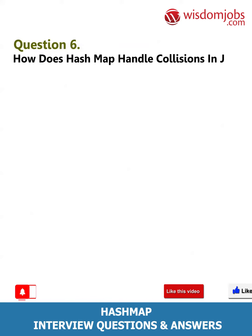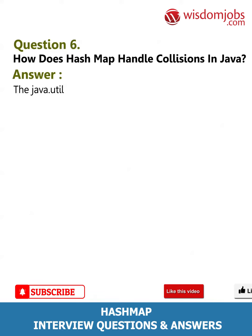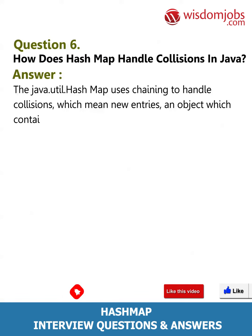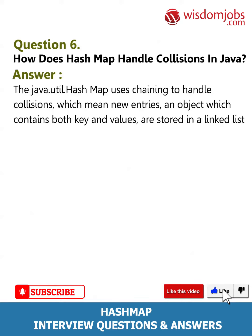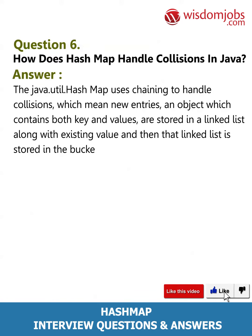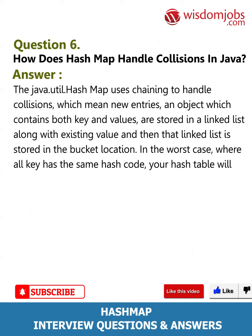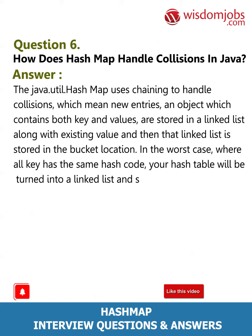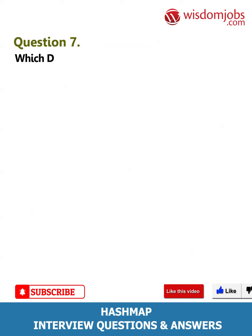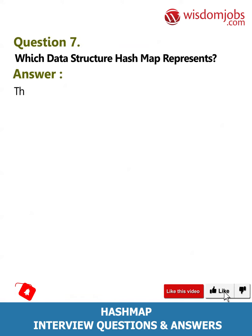Question 6: How does HashMap handle collisions in Java? Answer: java.util.HashMap uses chaining to handle collisions, which means new entries — objects containing both key and value — are stored in a linked list along with existing values, and that linked list is stored in the bucket location. In the worst case, where all keys have the same hash code, the hash table will be turned into a linked list and searching a value will take O(n) time as opposed to O(1) time.